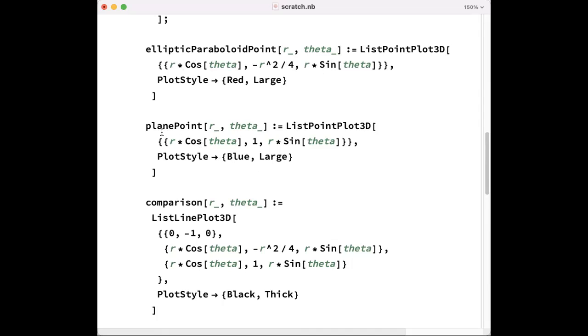Let's do the same thing for a point on the plane. Let's use the same R and theta that I did to make a point on the elliptic paraboloid, but let's say R cosine theta, R sine theta for X and Z, and the Y will be fixed at 1. Let's make this point blue and the point on the paraboloid red.